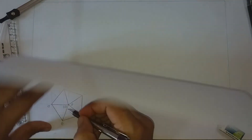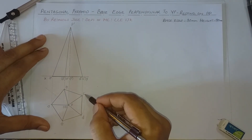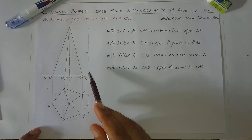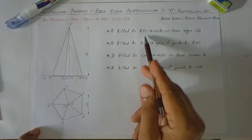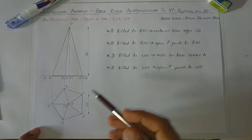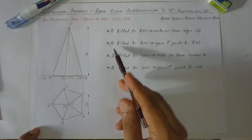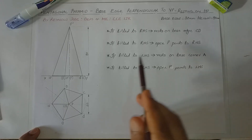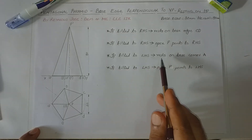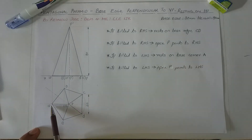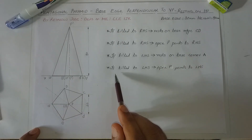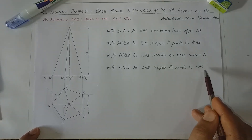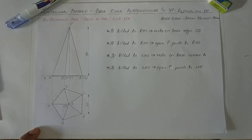PC and PB will be invisible because C and B are invisible in the front view. If the solid is tilted to the right hand side, it will be resting on base edge CD and the apex P will be pointing towards the right hand side. If the solid is tilted to the left hand side, it will be resting on base corner A and the apex P will be pointing towards the left hand side.